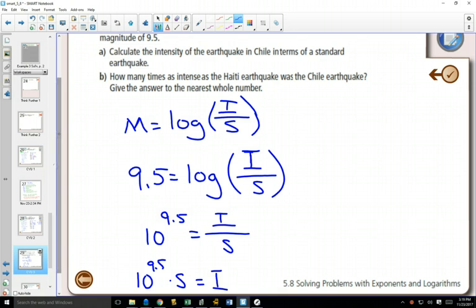Now the Haiti earthquake had a magnitude of 7. I'm going to put a little C by this intensity to say that was the intensity of Chile. If we did the same thing, the intensity for Haiti would be 10^7, because its magnitude was 7, times the standard earthquake.